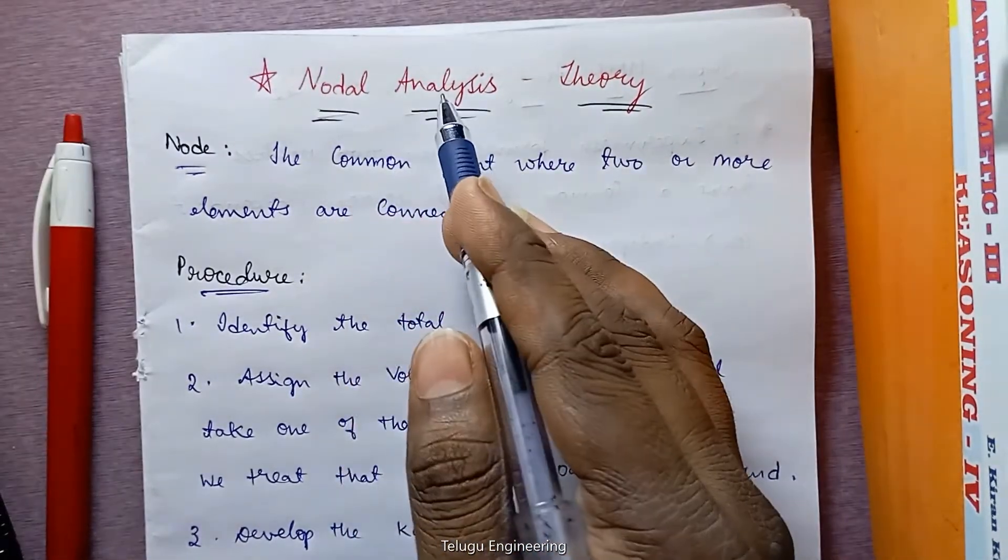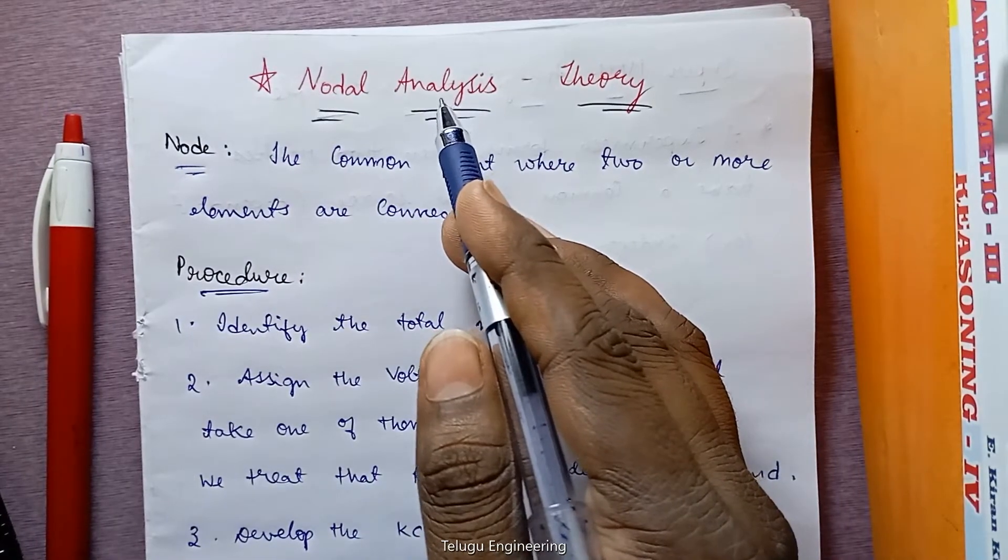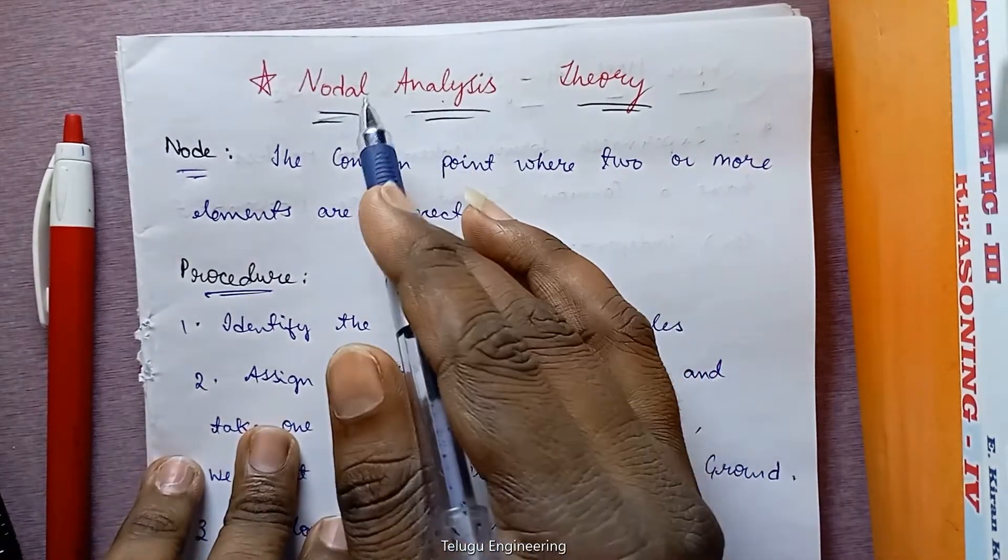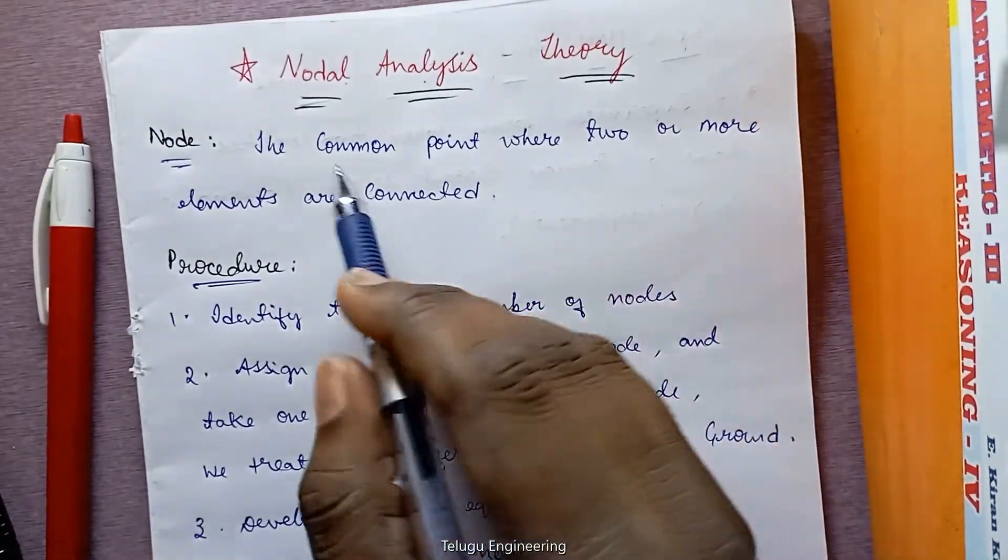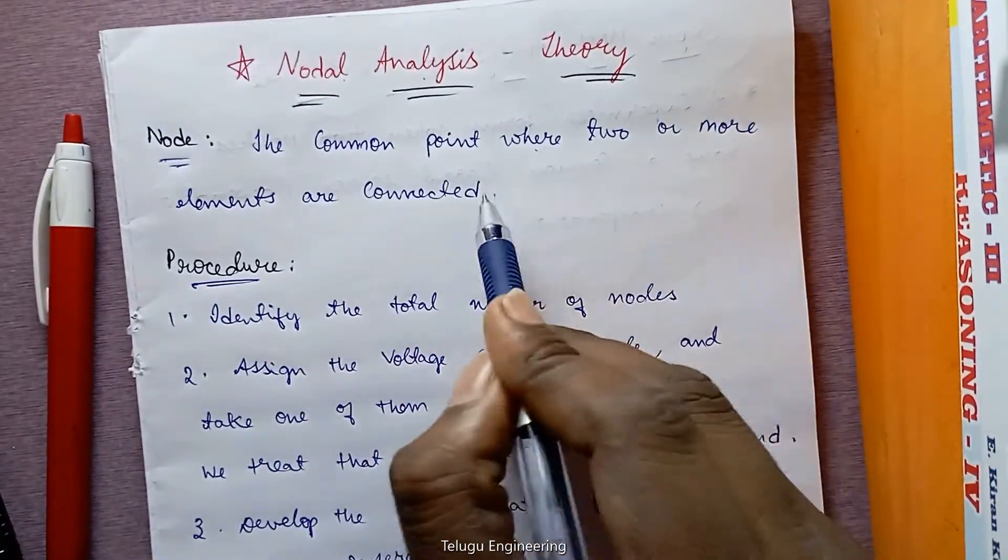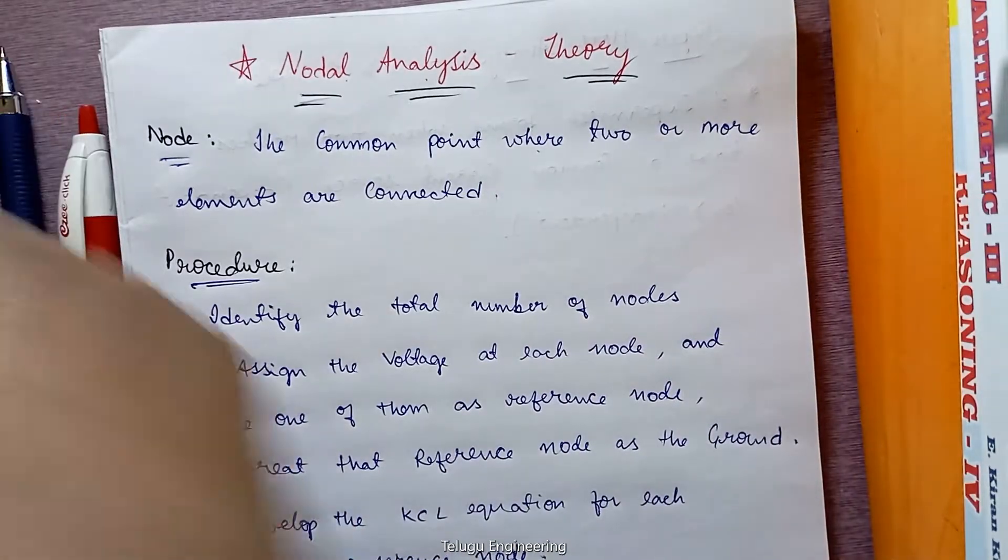In nodal analysis, the word itself says we will be analyzing circuits by using nodes. First, a node is the common point where two or more elements are connected. When two or more elements are connected, we call it a node.